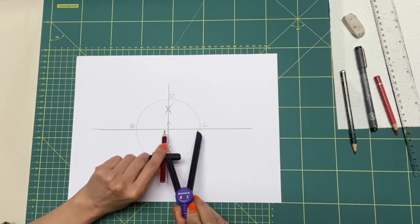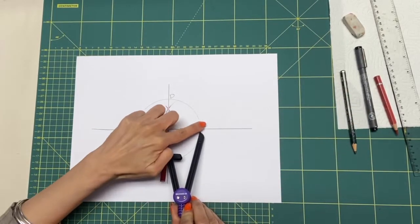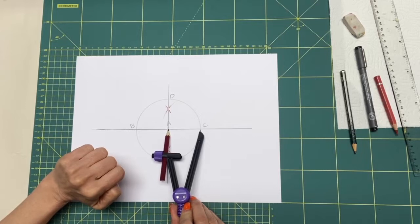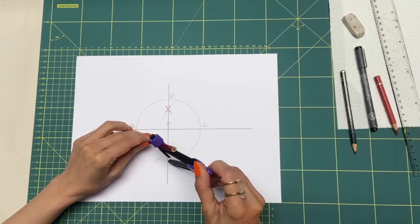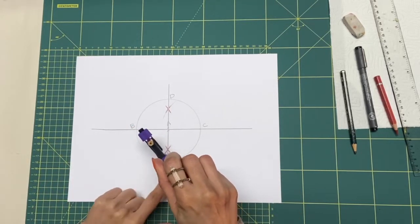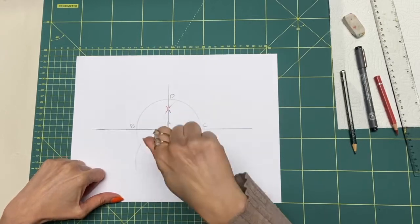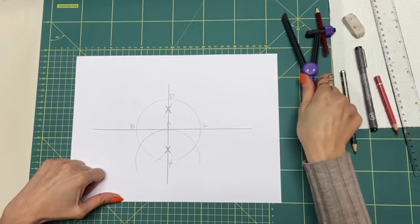This time open the compass the same size as the circle's radius. The center is point F. Draw a half circle with center F.